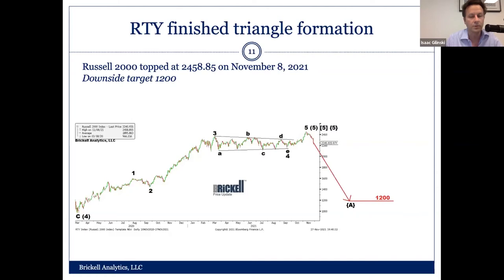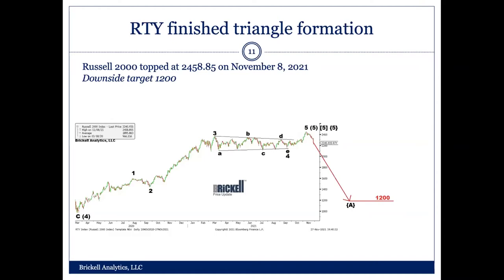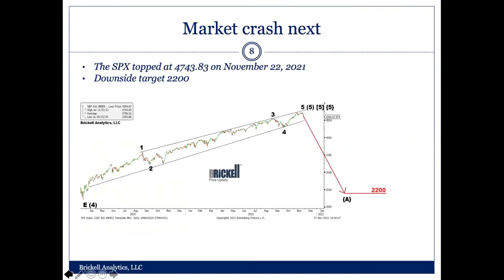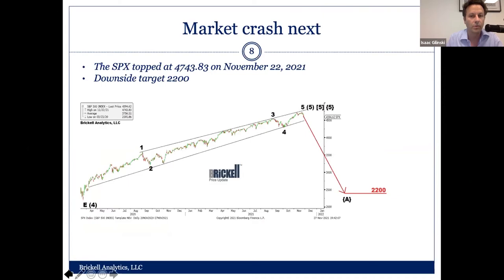What is your target on the S&P? 2200 — it's the COVID lows. These ending diagonal patterns, once they end, they go back to where they started. The S&P bottomed on March 23rd at 2,191, so it should get back to that level.